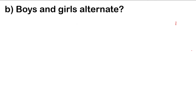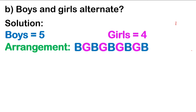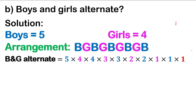Recap for letter B — boys and girls alternate. We have 5 boys and 4 girls, and the only acceptable arrangement is: boy, girl, boy, girl, boy, girl, boy, girl, boy. There is only one arrangement. Now let's explain how we get 5 factorial × 4 factorial.